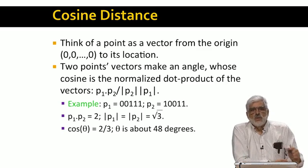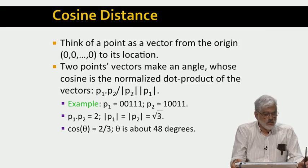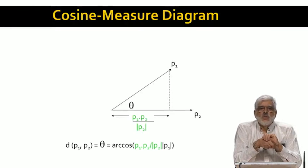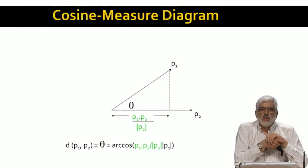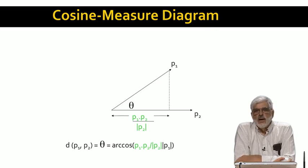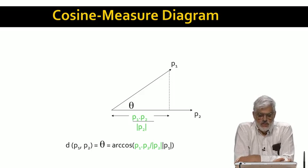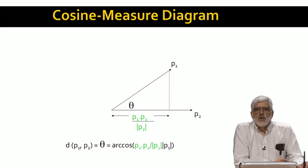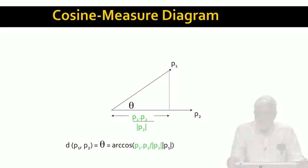Here's a diagram with the two vectors p1 and p2 shown in the plane that passes through them. No matter how many dimensions the vectors have, any two lines that intersect — and p1 and p2 do intersect at the origin — will form a plane. If you project p1 onto p2, the length of the projection is the dot product divided by the length of p2. Then the cosine of the angle is the ratio of adjacent over hypotenuse: the dot product divided by p2 is the adjacent, and the length of p1 is the hypotenuse.